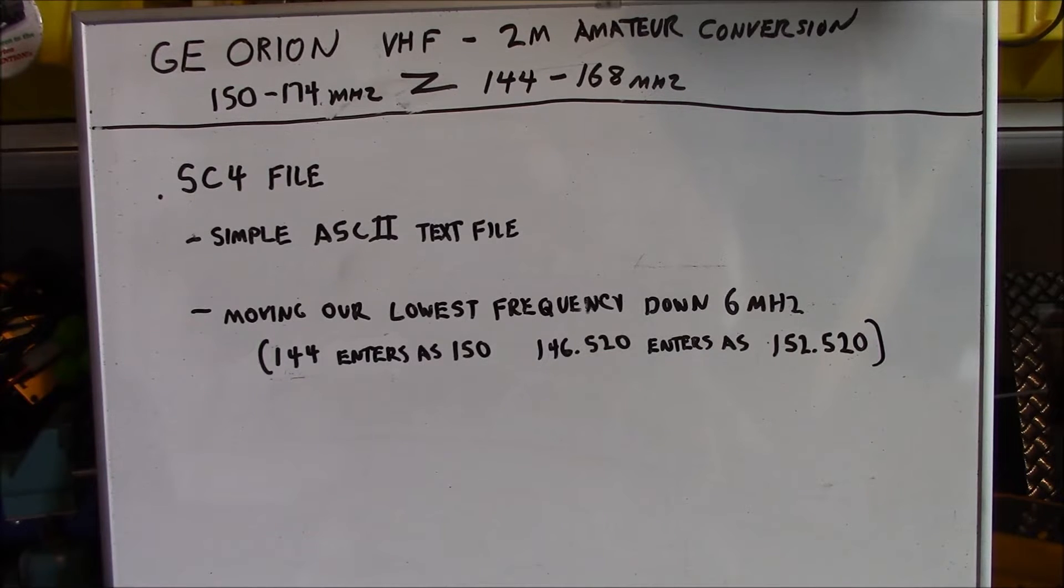The tool we're going to use to accomplish this is the use of what's called an SC4 file. An SC4 file is just a simple ASCII-2 text file. And I'm going to show you how to make your own. And all you're doing is moving the lowest frequency down 6 megahertz. So 144 megahertz will be entered as 150 or 146.520 would be entered as 152.520. So essentially, after the installation of that file, when you enter in the frequencies as specified, the software itself is allowing you to enter the frequencies because it's seeing them as being in the operating range of the radio and allowing you to write it to the radio, bypassing whatever error checking is involved, and allowing the radio to function at those new frequencies software-wise.